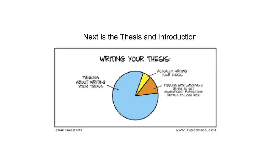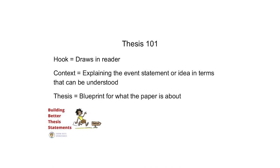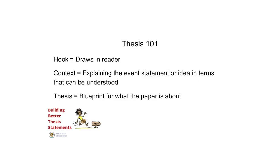I'm going to go over two types of thesis writing — this is Thesis 101. The first sentence you write in your introductory paragraph after research is a hook. Think of it like a fish hook, drawing the reader into the paper — something catchy. Next you'll use context, usually about two to four sentences, which explains the event, statement, or idea in terms that can be understood. Always assume whoever's reading your paper knows of the subject but knows nothing of the topic.